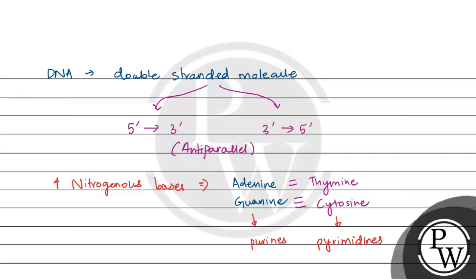That means we can say that in a DNA, the number of purines is equal to the number of pyrimidines.